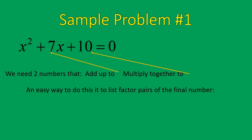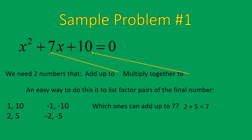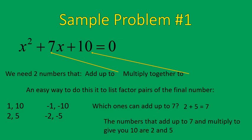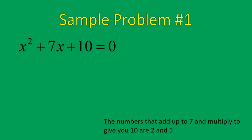The easiest way to do this is to start with factor pairs that multiply together to give you 10. I've listed some there: 1 times 10, negative 1 times negative 10, 2 times 5, and negative 2 times negative 5. It's important to consider positives and negatives because you'll sometimes end up using those. Then I ask myself which of these adds up to give me my middle term, 7. Well, 2 plus 5 is 7 — those are the two numbers I need. So the numbers that add up to 7 and multiply to 10 are 2 and 5.